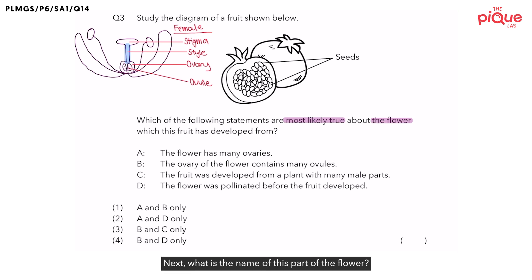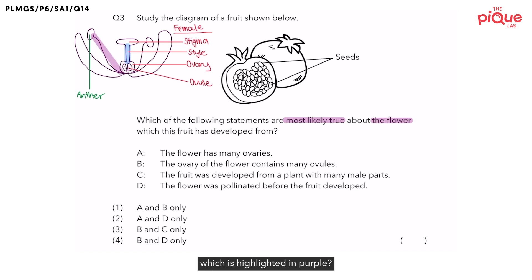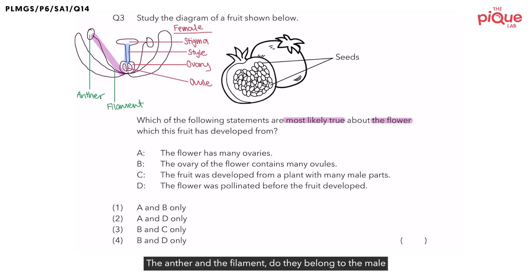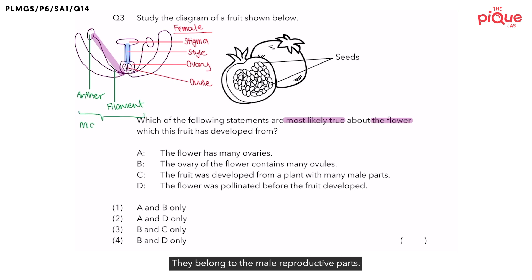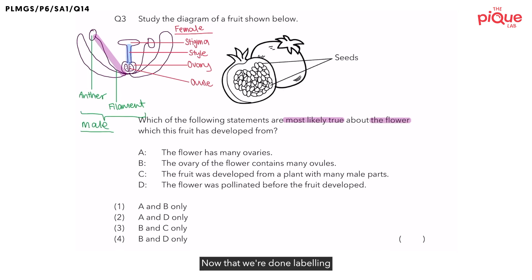Next, what is the name of this part of the flower? This part is known as the anther. And what is the name of the part that is holding the anther up, highlighted in purple? This is known as the filament. The anther and the filament belong to the male reproductive parts of the flower.